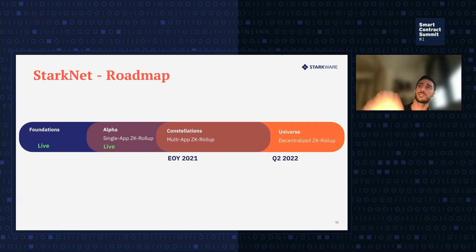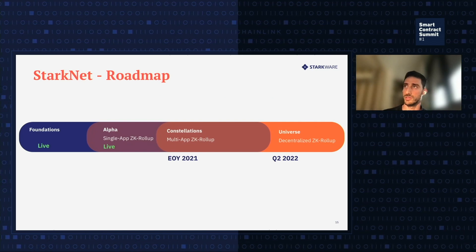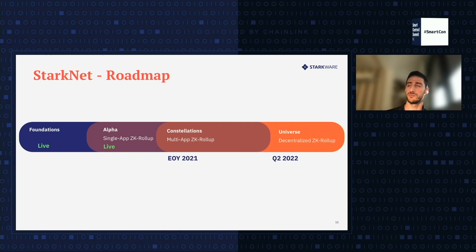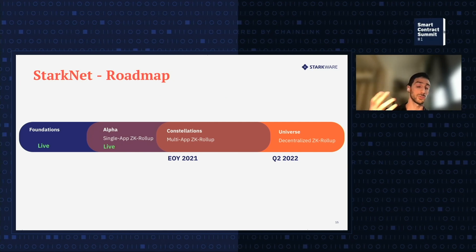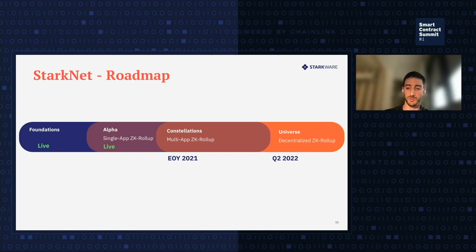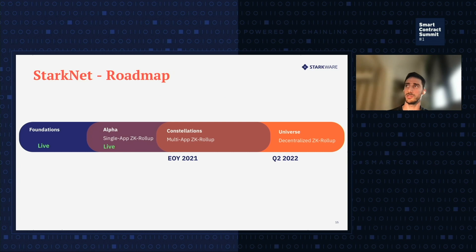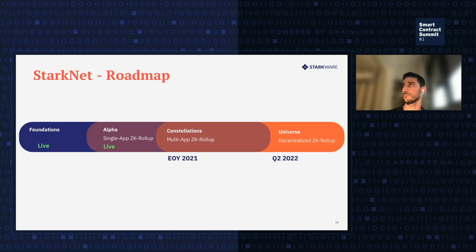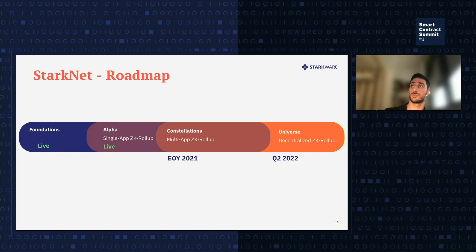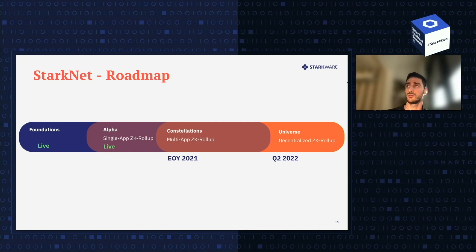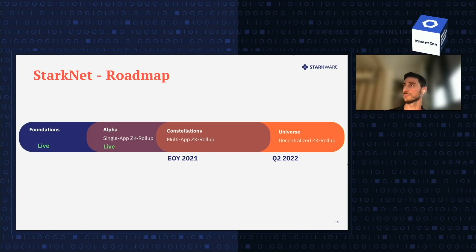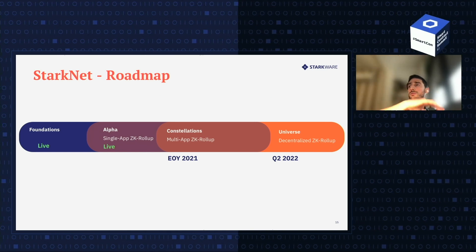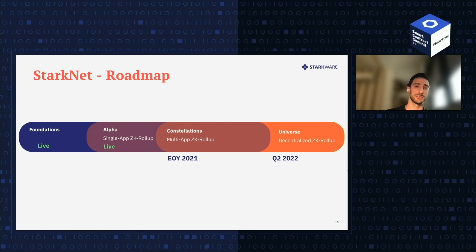Our roadmap: we have the foundation, as I've said, and we have the alpha, which has been live for two months and will be updated. The next alpha update will happen by the end of August, in about four to five weeks. It will add contract interaction, meaning composability on StarkNet — which is very exciting because it would be the last barrier for implementing any application we have today on Ethereum. Then we have Constellations, which is the first mainnet deployment, expected by the end of this year. That deployment will be with a single sequencer, as a universe, with the next step being to decentralize the sequencer layer, which we plan for by mid next year.